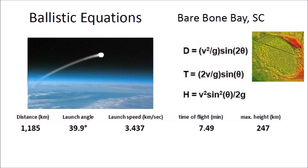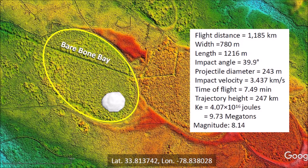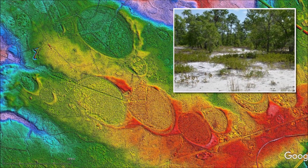The boulder reached a height of 247 kilometers above Earth's surface, making the trajectory a suborbital spaceflight in the vacuum of space. The kinetic energy of the impact that made Bare Bone Bay was equivalent to 9.73 megatons of TNT, which would have caused seismic vibrations of magnitude 8.14. When you explore the Carolina Bays on foot, there is not much to see — just patches of sand forming the rims, with muddy, insect-infested, impenetrable brush at the centers. However, the LiDAR images give us a spine-chilling perspective of a horrific extinction event in Earth's recent past, and that is very exciting.